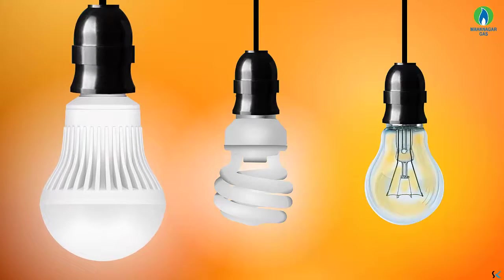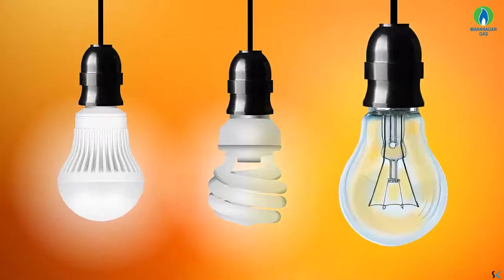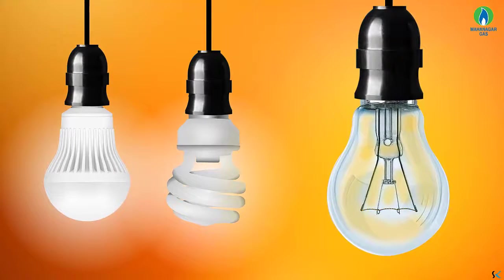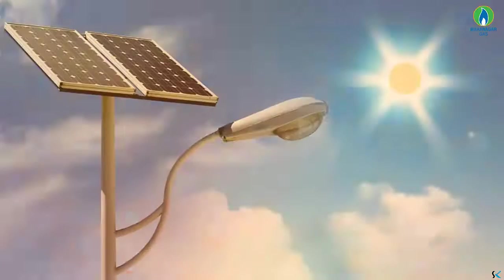LEDs and CFLs convert electricity to visible light up to 5-10 times more efficiently than ordinary bulbs and thus save about 70% of electricity for the same lighting levels. 90% of the energy consumed by an ordinary bulb, incandescent lamp, is given off as heat rather than visible light. Utilize sunlight, solar energy.